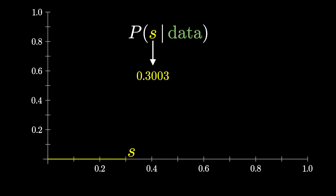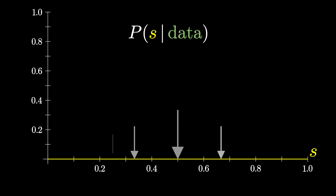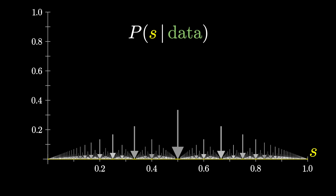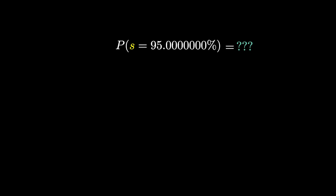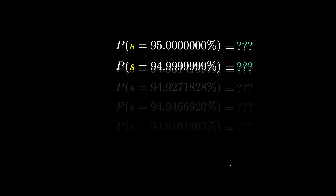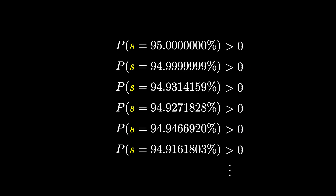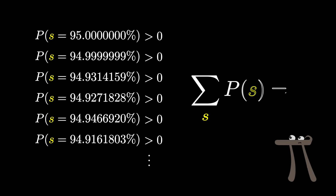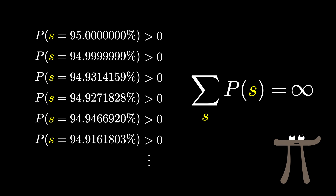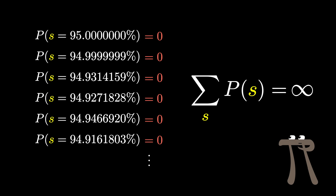In reality, this unknown value S can be any real number between 0 and 1. But if we want to assign a probability to each one of those uncountably infinitely many values, there's a strong potential for paradox if you're not careful. What's the probability that the true success rate is precisely 95% and not, say, 94.9999999%? If every single specific value within some range has a non-zero probability assigned to it, then the total probability is going to blow up to infinity. But if we set all of them equal to 0, then the total sum is 0, when in reality it should add up to 1.